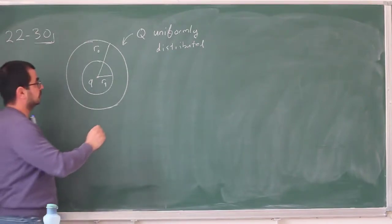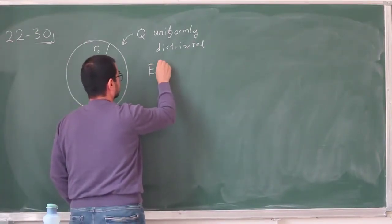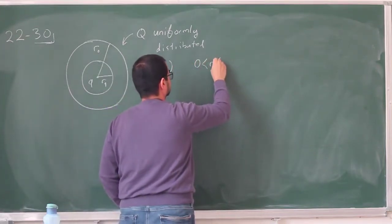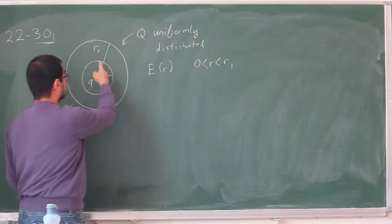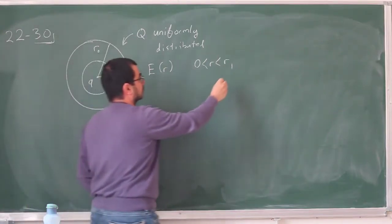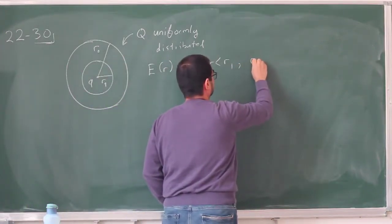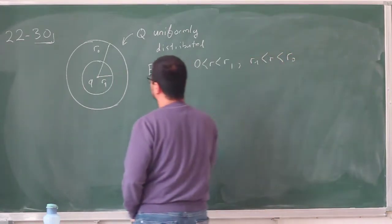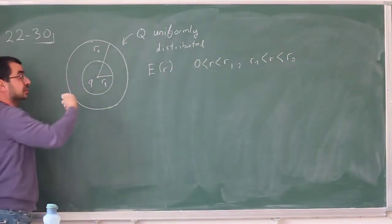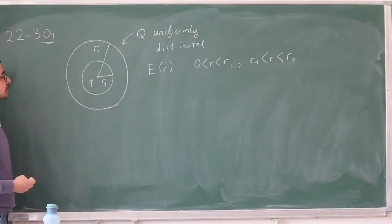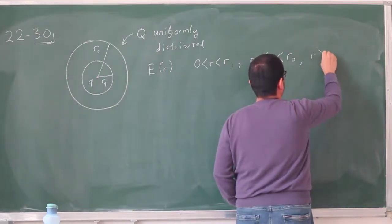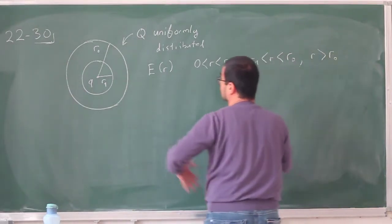And we are asked the electric field at r for three regions: for the inner cavity r less than R1, for inside this shell which is by the way not a conductor, it's an insulating shell, and finally for r larger than R0, so outside this.